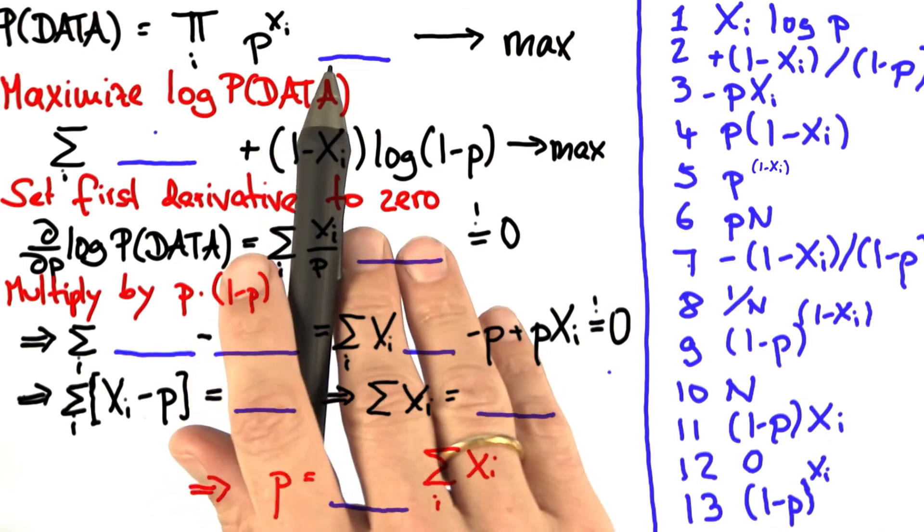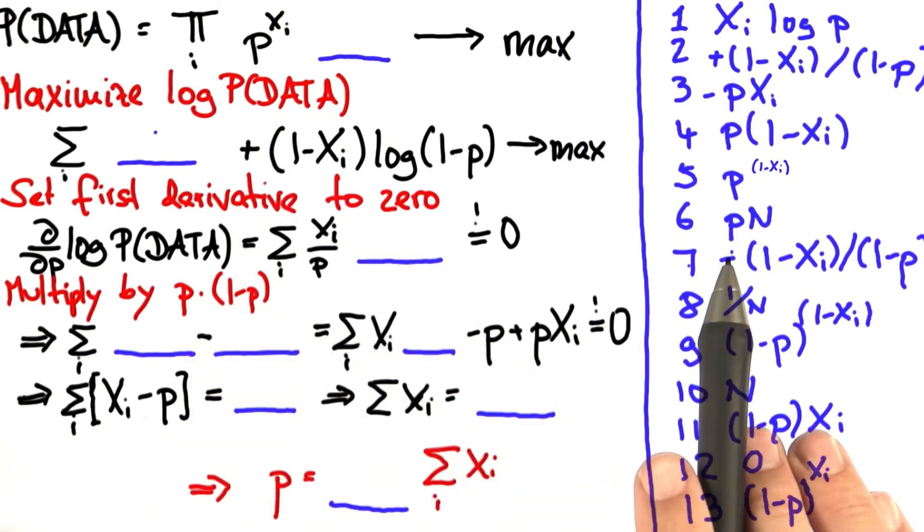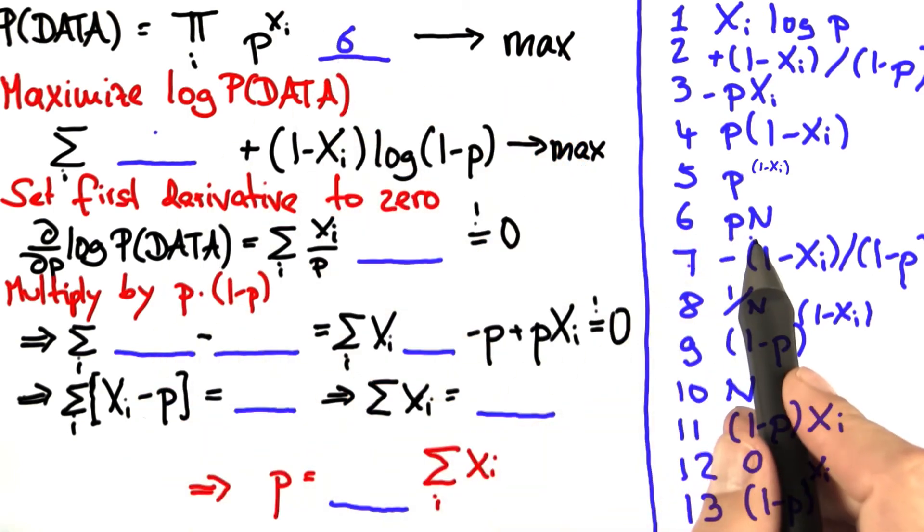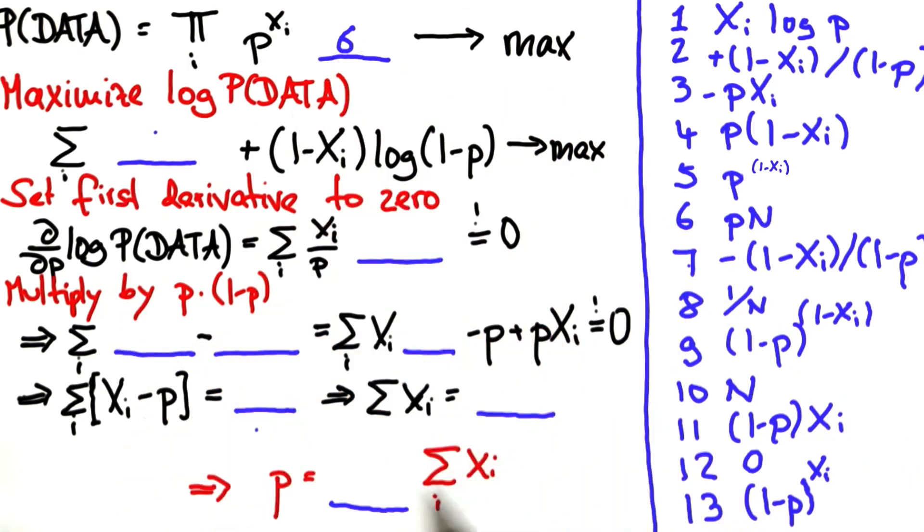So for example, if you believe that the right answer over here is pN, then you're going to type 6 into the box over here, and pN is now used up. You can't write 6 anywhere else. So good luck with this.